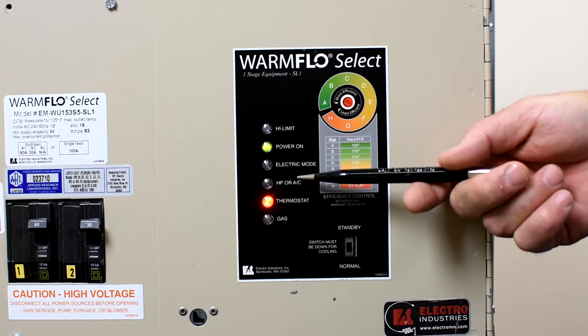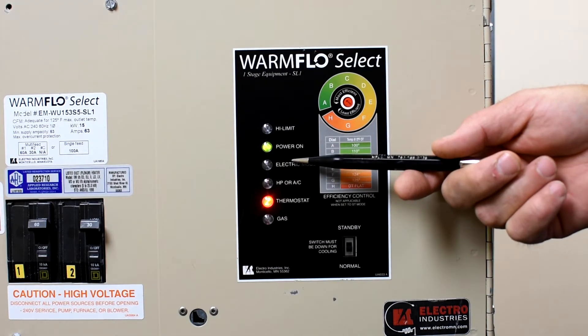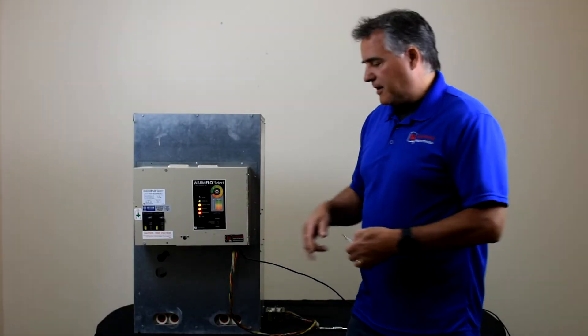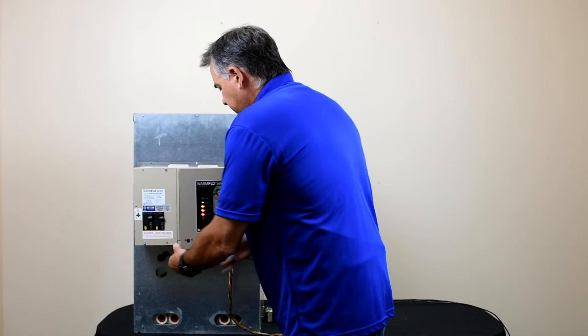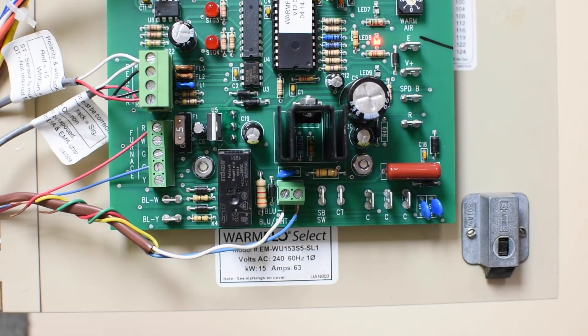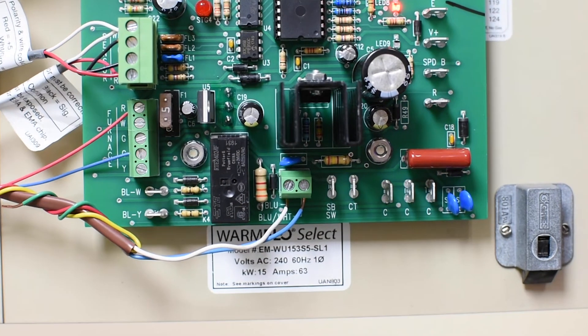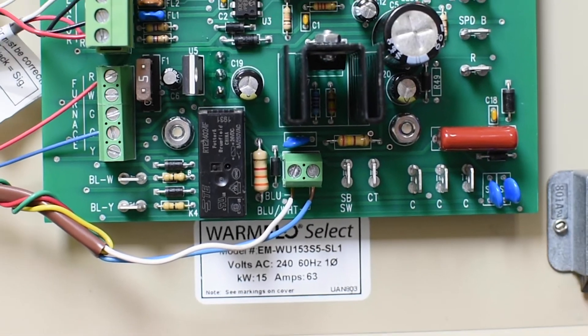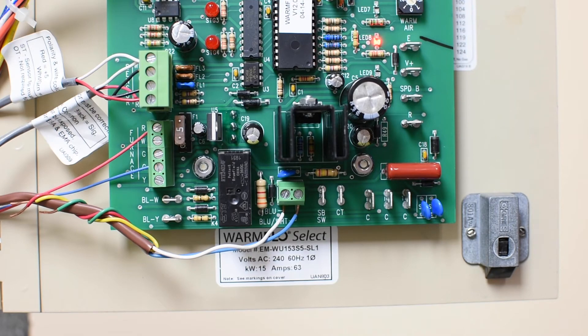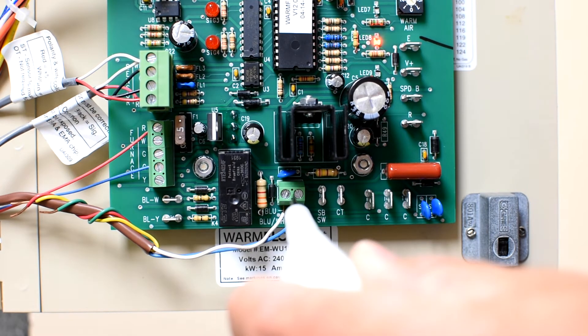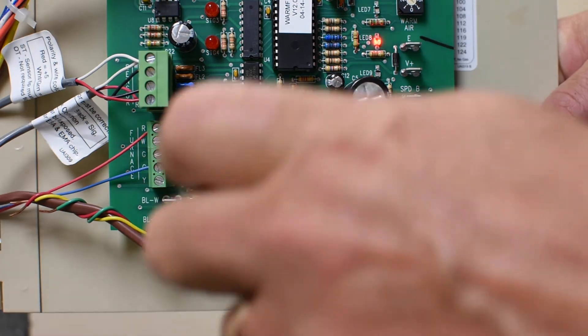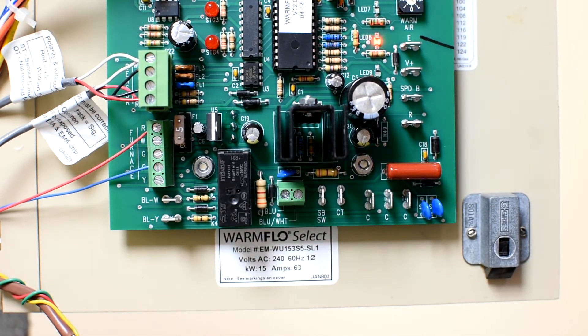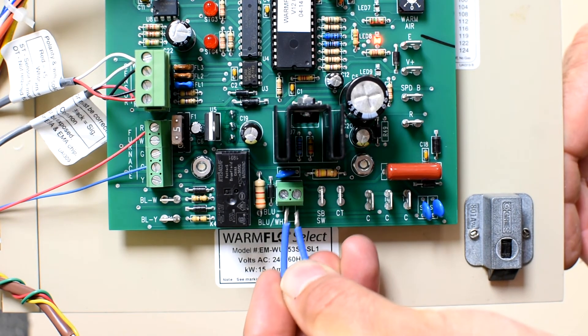If our electric mode light is off and our standby normal switch is in the normal position, the next thing we want to check is our utility control connections. When you open up the control board, you're going to find a terminal that's labeled blue blue white, and on some older versions, it'll actually be a blue and blue white wire. That circuit has to be closed for the system to go into cooling mode. If that system is open, that means that the power company or utility is doing a control. What we can do is temporarily bypass that circuit—just pull the two wires off and place a jumper in there.